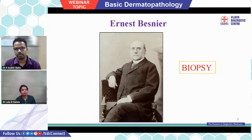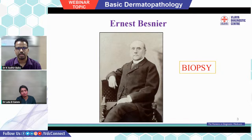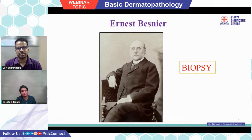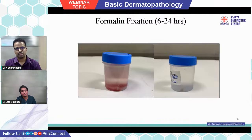To look at tissue, you need to cut it into thin slices, keep it on a slide, stain it, and then visualize it under the microscope. But by the time you do all these things, the tissue gets decomposed. So the first step is to preserve the tissue, which is done with the help of formalin.